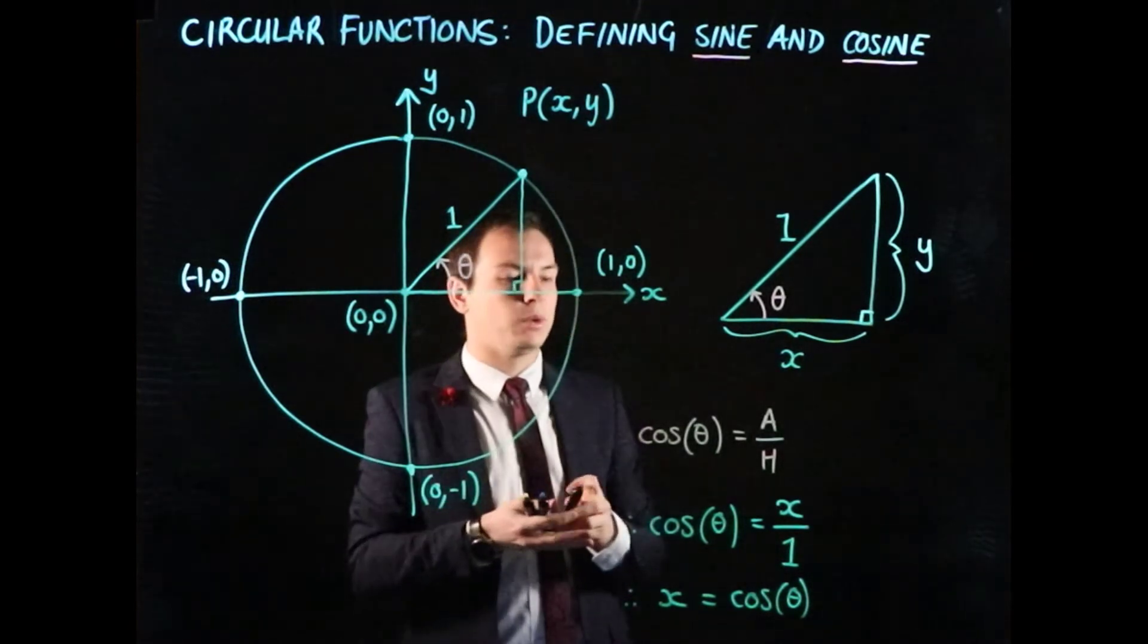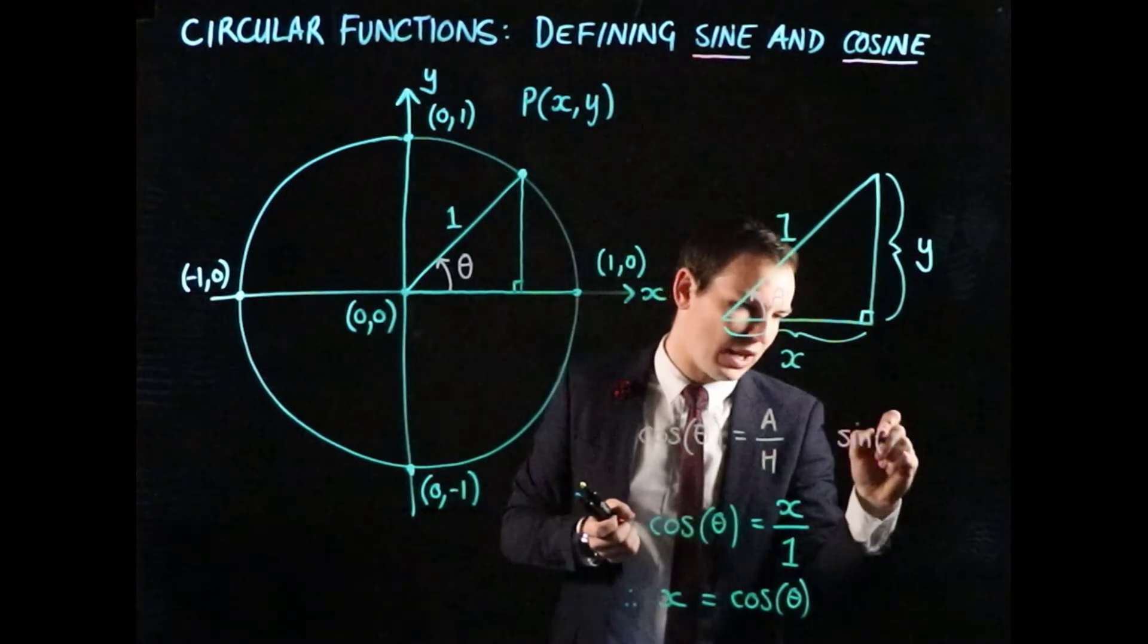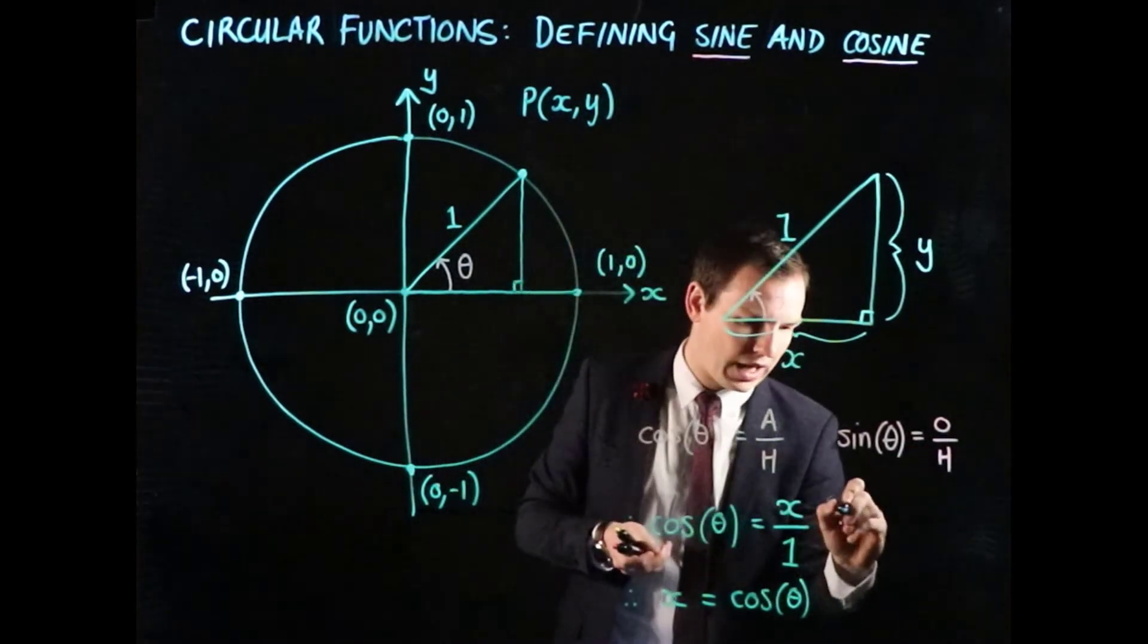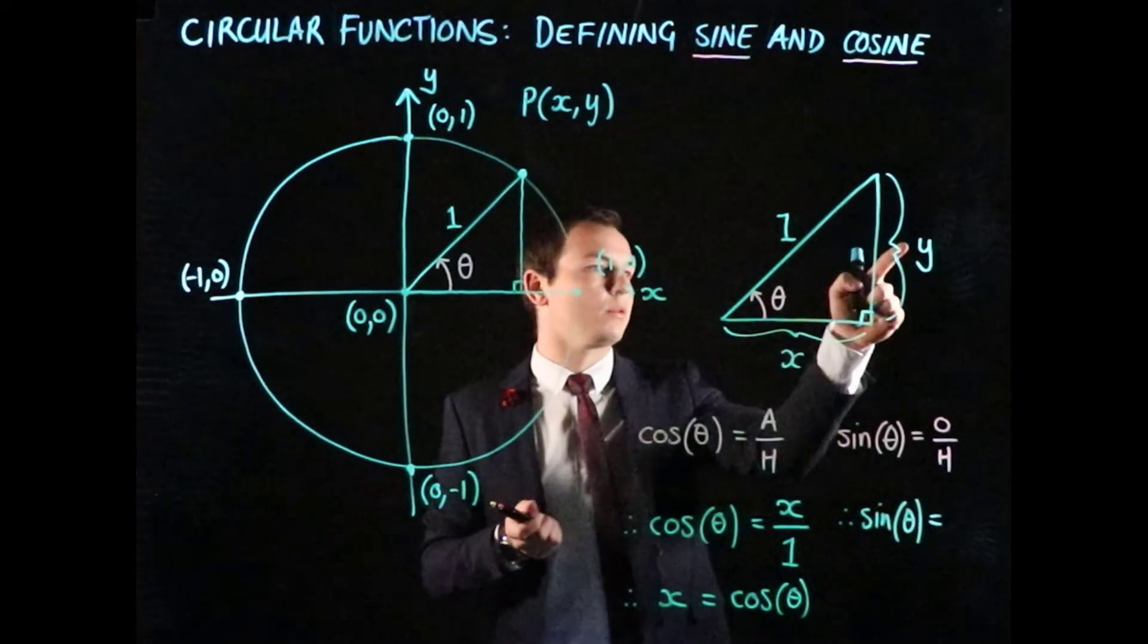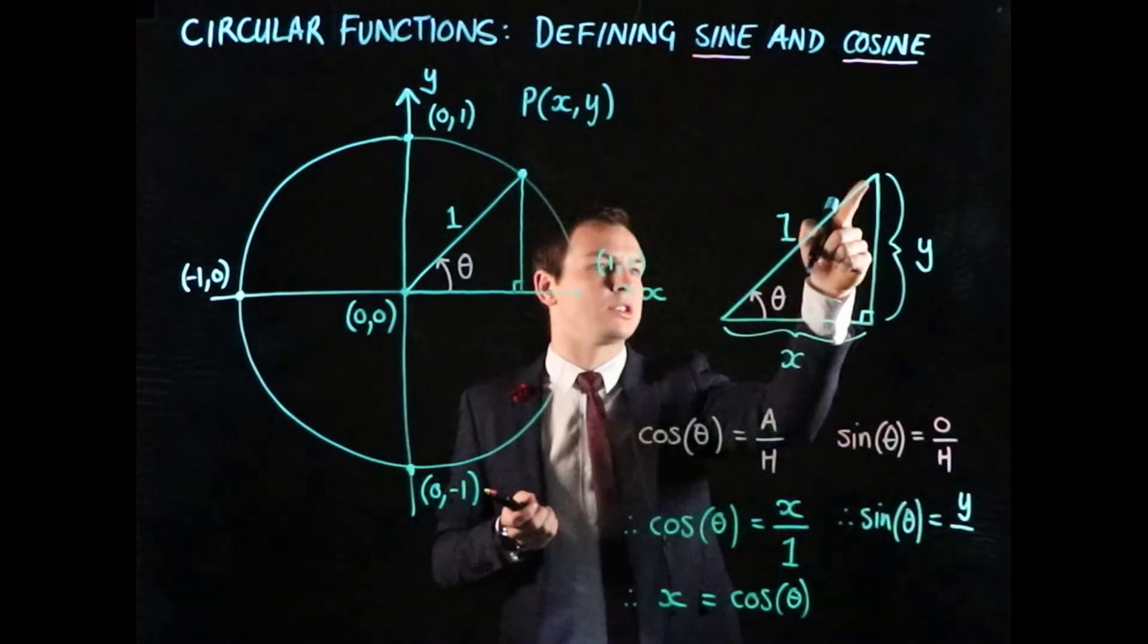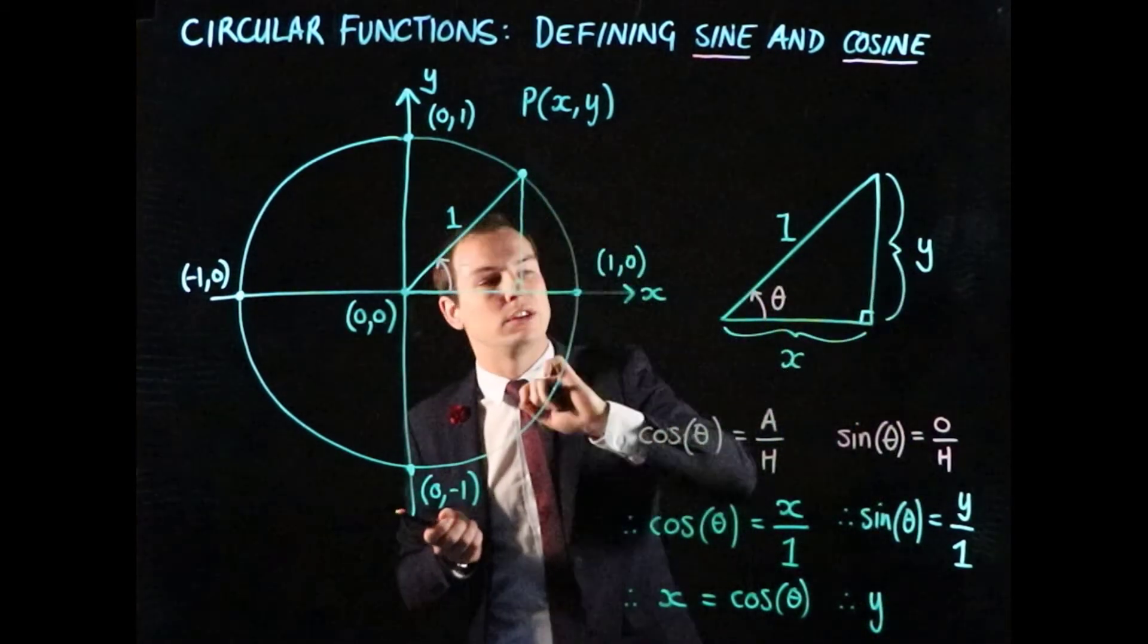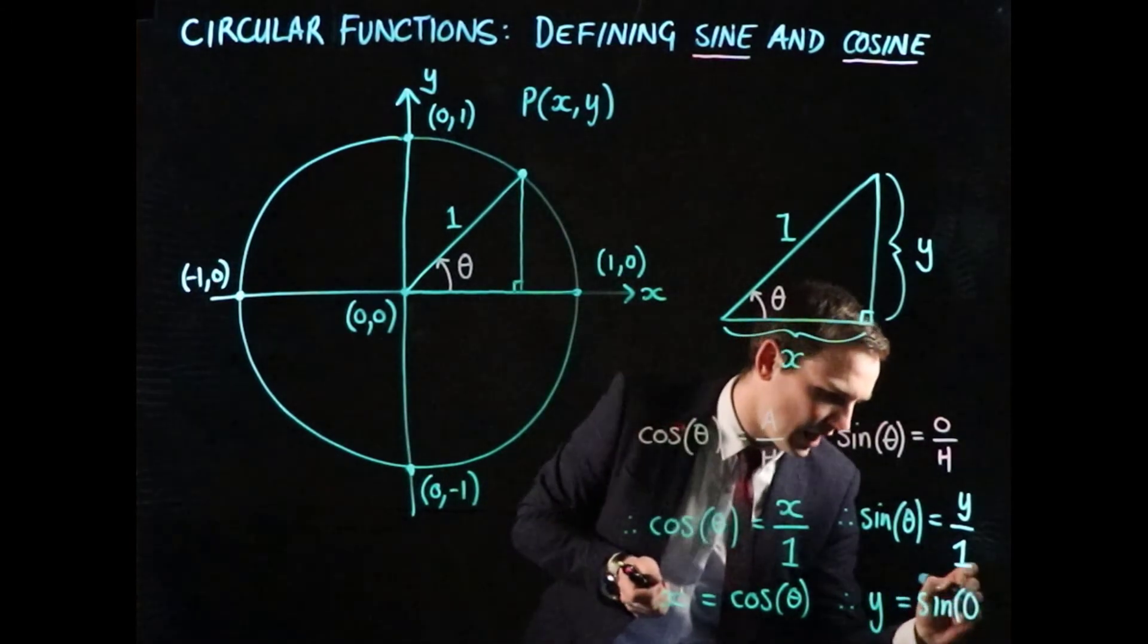As you may guess, we can now do a similar thing for sine. We know that sine of our angle is going to equal the opposite over the hypotenuse. Therefore, sine of theta is going to equal the opposite length, which is represented by y, divided by the hypotenuse's value of 1. So therefore, we've found that y, this length here, or in fact that length there in the unit circle, is representing sine of the angle theta.